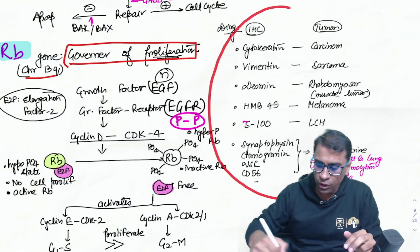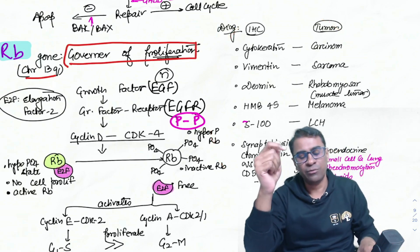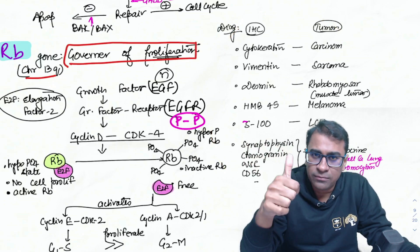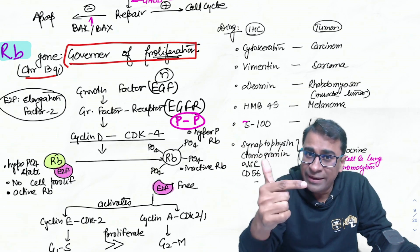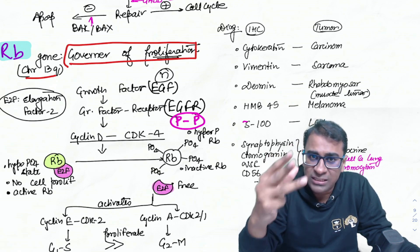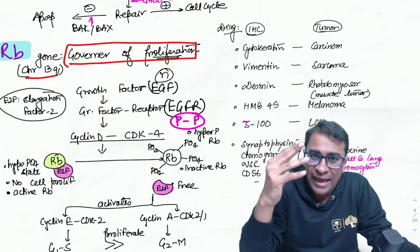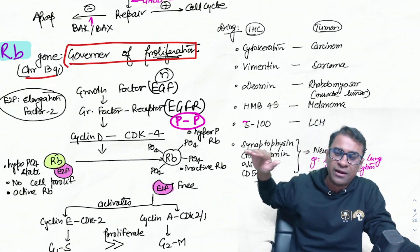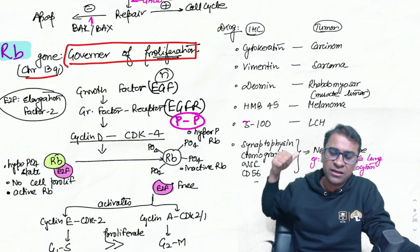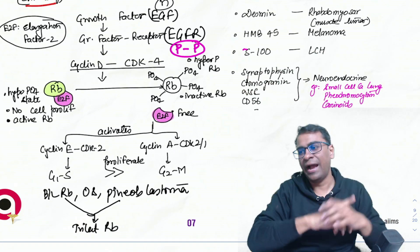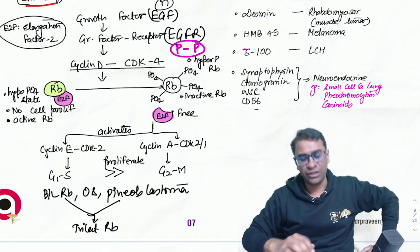To summarize IHC: cytokeratin — carcinoma; vimentin — sarcoma; desmin — rhabdomyosarcoma; HMB45 — melanoma; S100 — LCH; synaptophysin, chromogranin, neuron-specific enolase, CD56 — neuroendocrine tumors including small cell cancer, pheochromocytoma, and carcinoids.